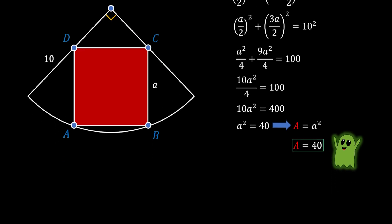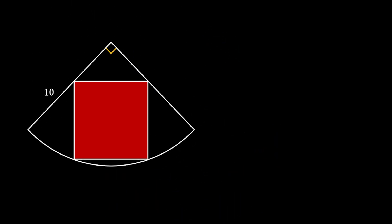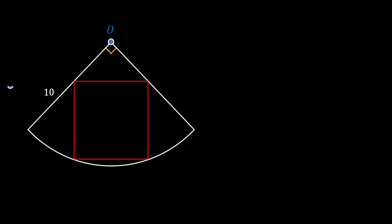Let's do method number 2: using the diagonal of the square. We will again mark the center of the circle as O and all vertices of our red square as A, B, C, and D, setting the side as A. From method 1, we know that triangle DOC is an isosceles right triangle, so we can expand this triangle to form a white square.